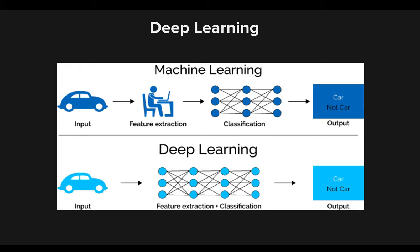A binary classification problem is simply classification between two categories — yes or no, or in this case, car or not car. Deep learning is much more interesting because in deep learning, we don't have separate feature extraction and classification. We have one network that performs both feature extraction and classification together. This is why we reduce the number of steps, and it's also why deep learning algorithms tend to be much more efficient, faster, and accurate.